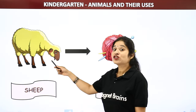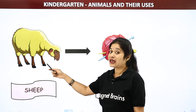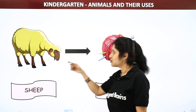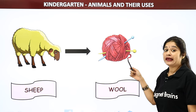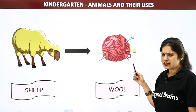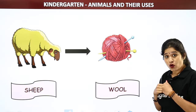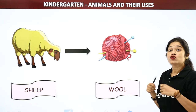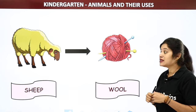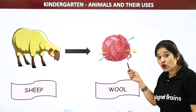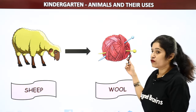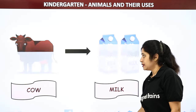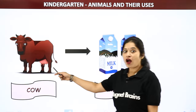The next animal is sheep. Sheep gives us wool. In winter season we used to wear woolen clothes like sweaters and mufflers, isn't it? So all these sweaters and mufflers are made up of wool. We get wool from sheep.